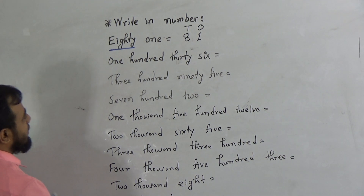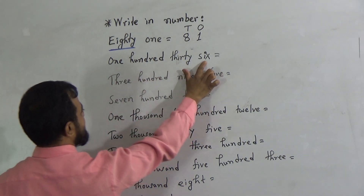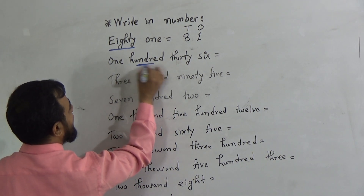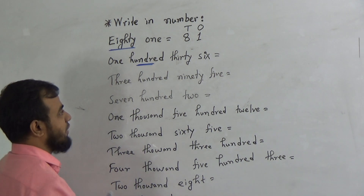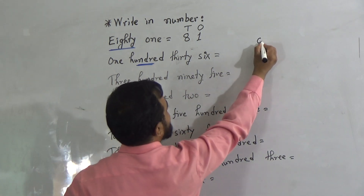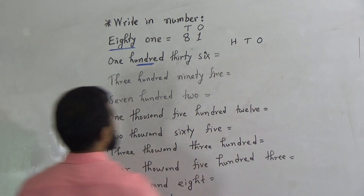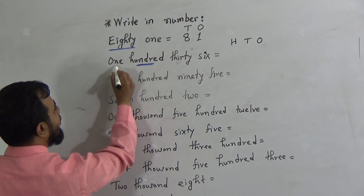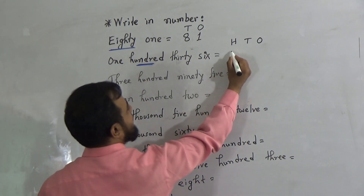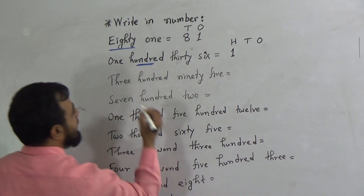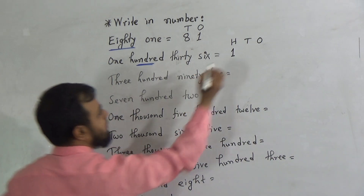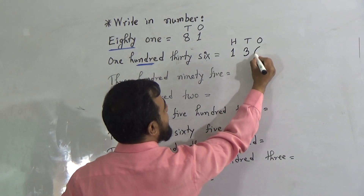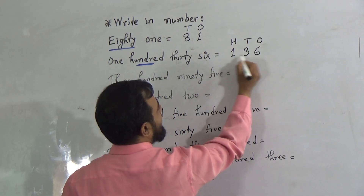Now the next number is 136. The highest place value is 100 here. That means we need to take up to the 100s place value. So it is 1s place, 10s place, and 100s place. Now I can write down this number easily. To write down 100, we must write down 1 in the 100s place. To write down 30, we should write down 3 in the 10s place. And to write down 6, we should write down 6 in the 1s place. This gives us 136.